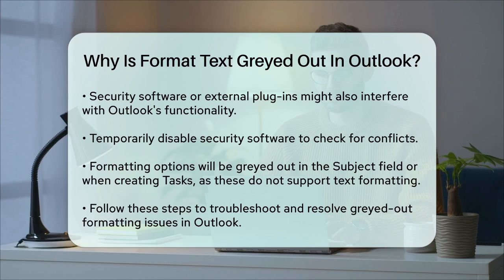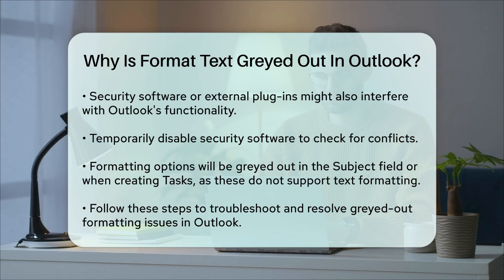Lastly, if you're working in the subject field or creating tasks, the formatting options will naturally be grayed out because these fields do not support text formatting. By following these steps, you should be able to identify and fix the issue with grayed out formatting options in Outlook.